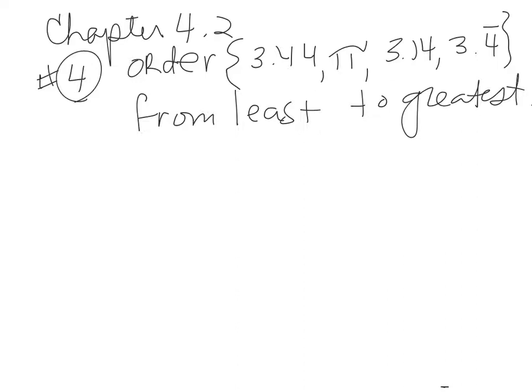Number four, we're ordering the set of numbers 3.44, pi, 3.14, and 3.4 with a bar notation so it repeats forever. We're going to line them up and check them out.